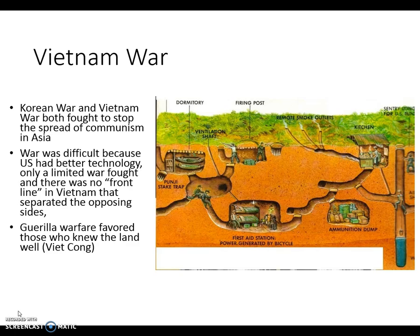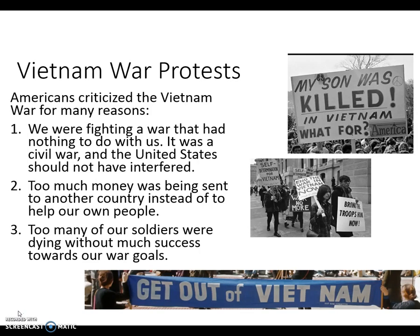In the Vietnam War, same as Korea, we're fighting to stop the spread of communism. The war was difficult because even though we had better technology, only a limited war was fought and there was no front line — it was very difficult to distinguish friend from foe. It was fought in the jungles of Vietnam. The Viet Cong, who were the communists fighting to take control of Vietnam and turn it into a communist country, had created an elaborate system of tunnels throughout the jungle and used guerrilla warfare — small hit-and-run attacks. They would disappear into the jungle and tunnels, making it very difficult for the United States to fight this war.